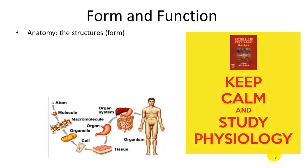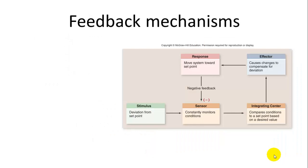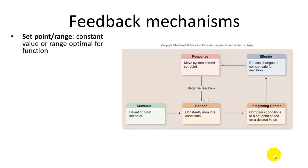One of the themes of biology is the connection between form and function. Anatomy is the study of those forms, from the microscopic cellular structures and organelles all the way up to organs and organ systems and the whole organism itself. Physiology is how the structures work — how they function to help maintain homeostasis. In order to do that, they have to have a feedback mechanism to understand what is going on in their surroundings and make changes internally. First, you have to have a set point or range at which physiological processes can function.